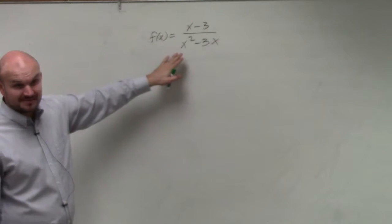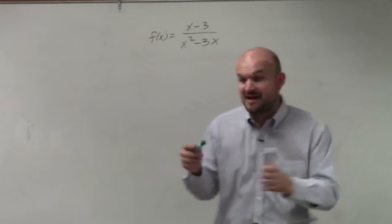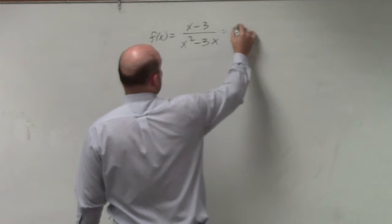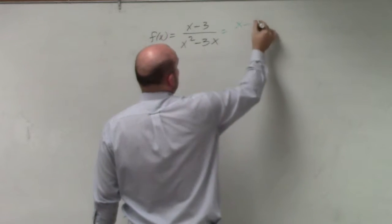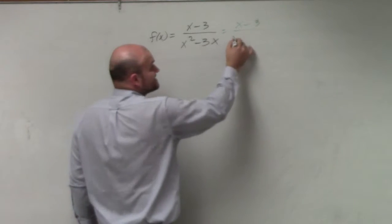Again, look to see if there's any vertical asymptotes. Always remember, first step is always factor. Always look to factor. So here, I can't factor the numerator. But in my denominator, what can I factor out?